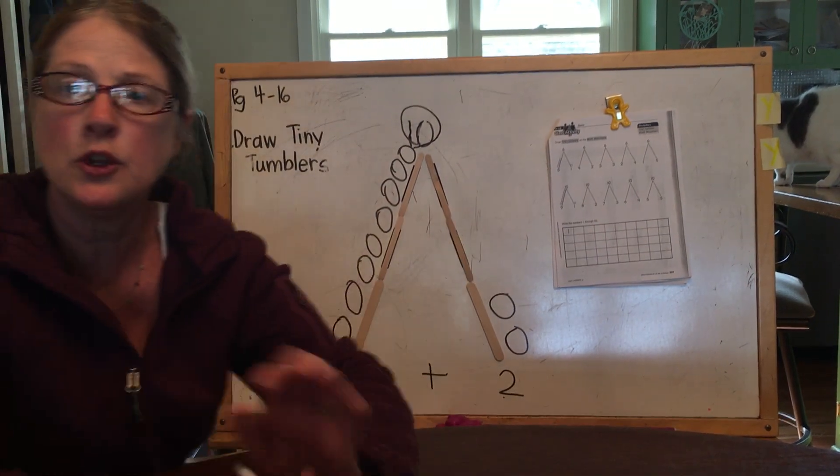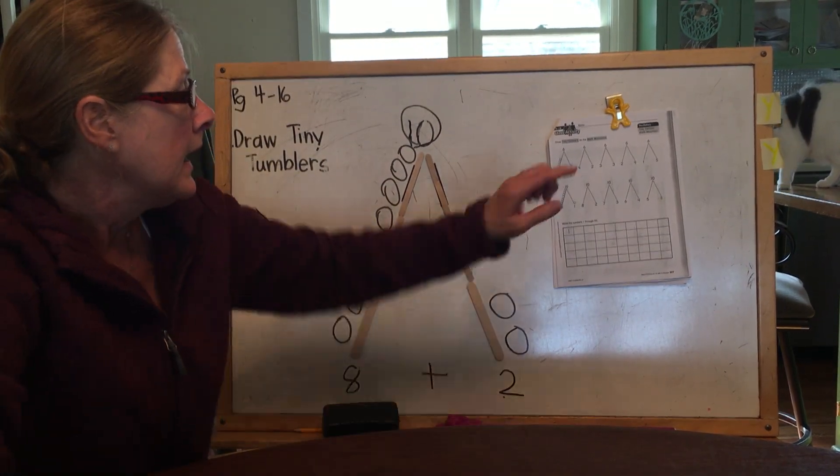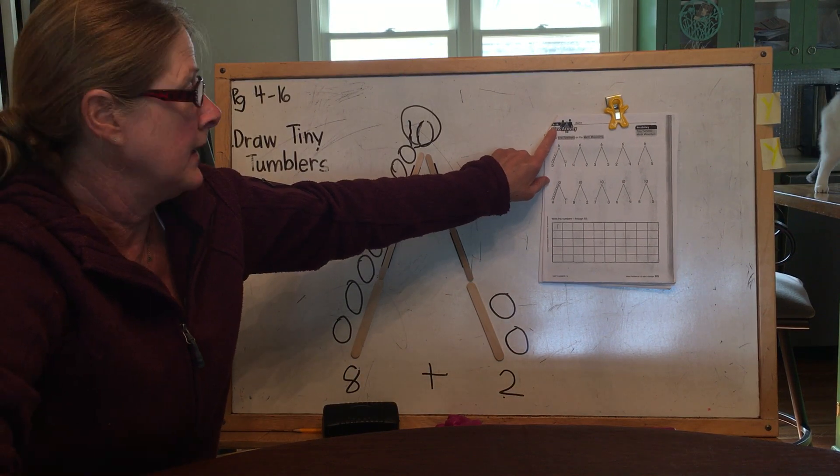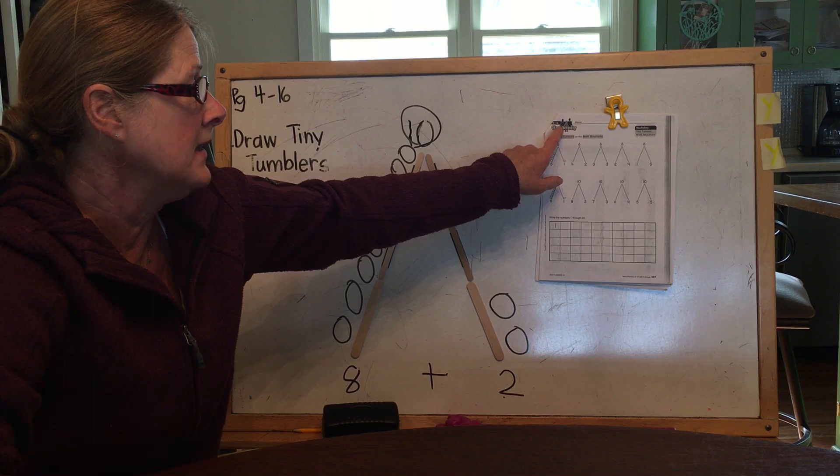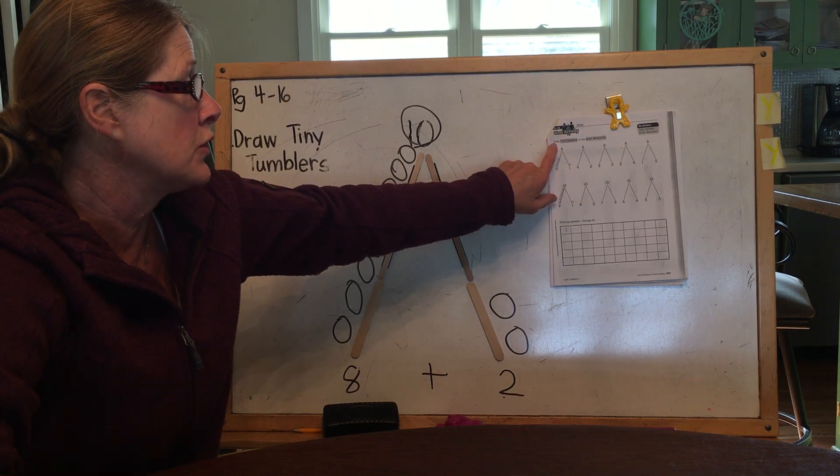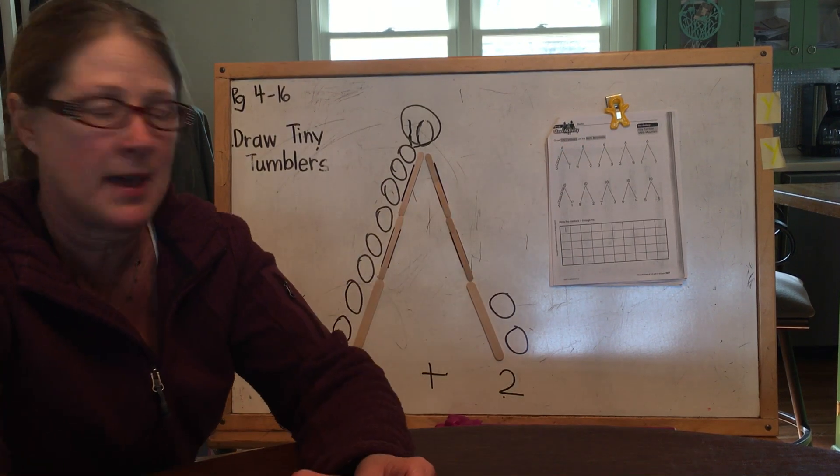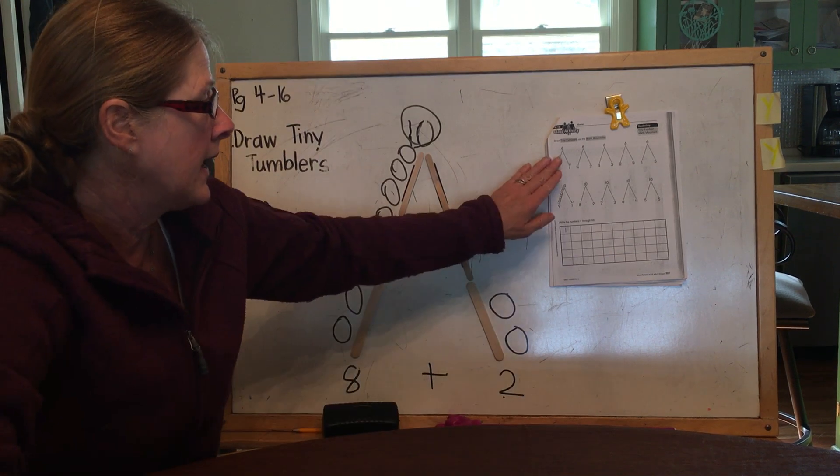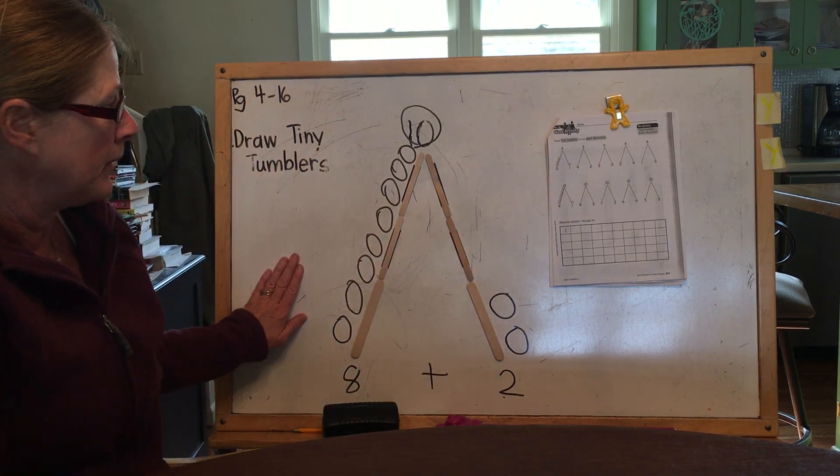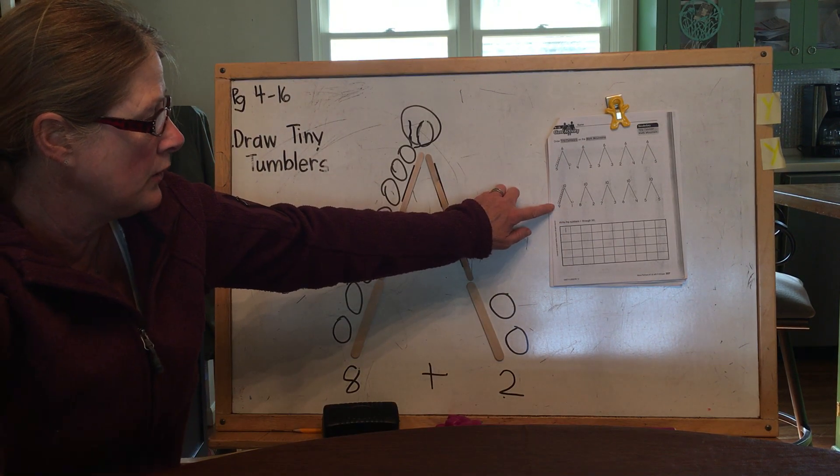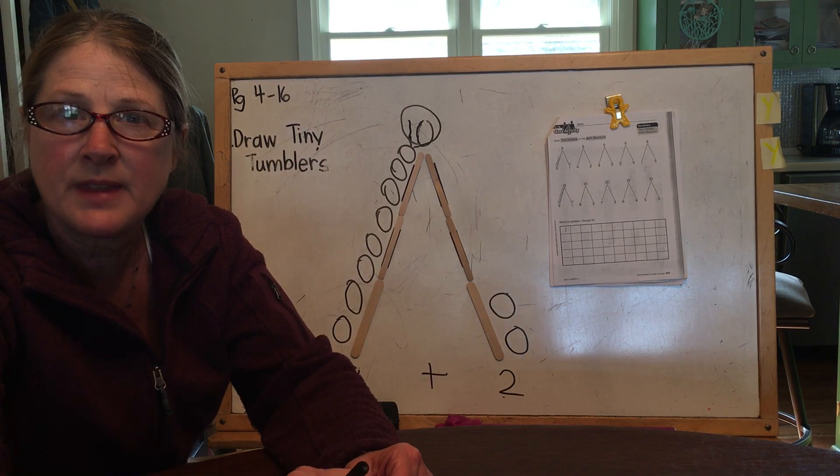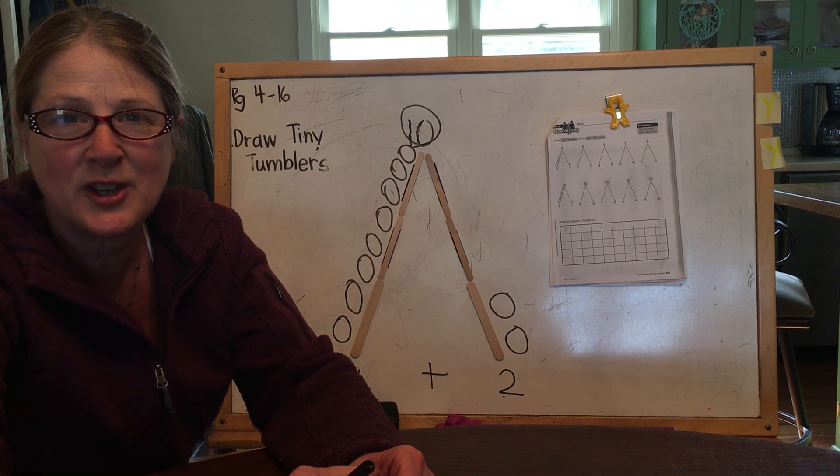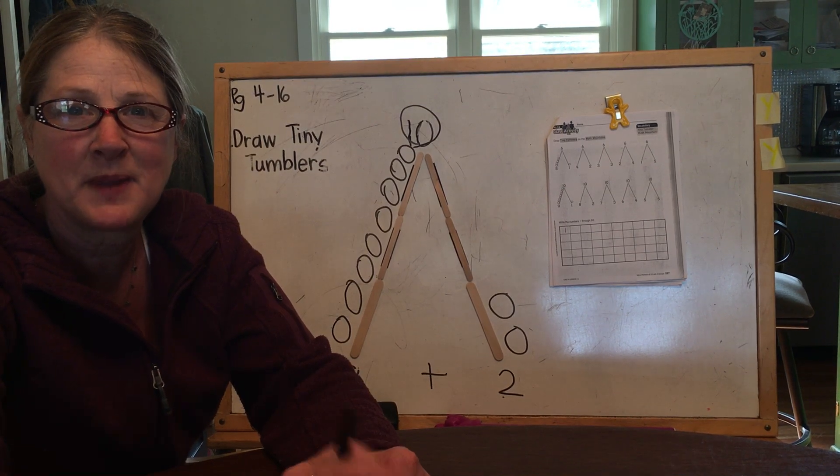Okay, so what I want you to do right now is go to your math packet and find 4-16 where they ask you to draw tiny tumblers on math mountains. Okay, so you can follow this example. Some have been done for you. And when you're all done, you can practice writing numbers one through 50. Thank you for watching and have fun with your math. Bye.